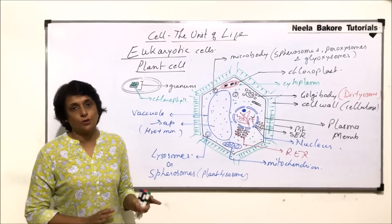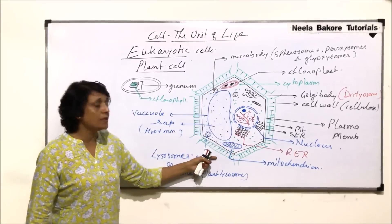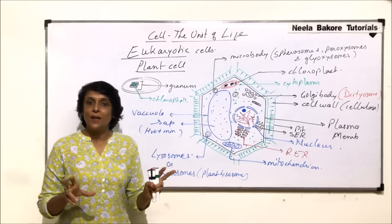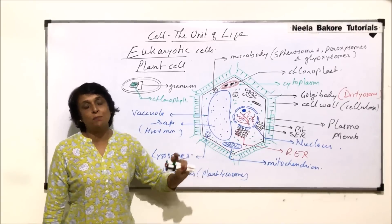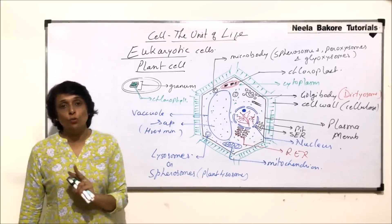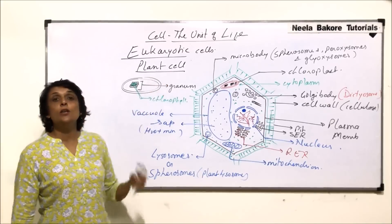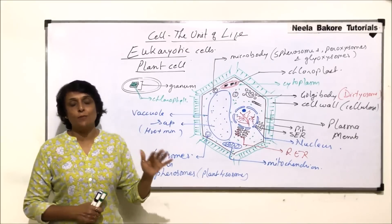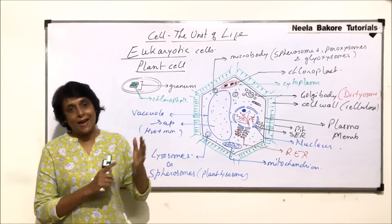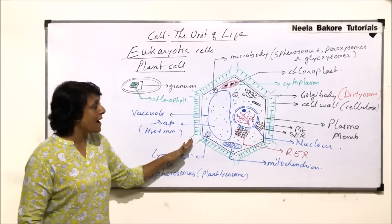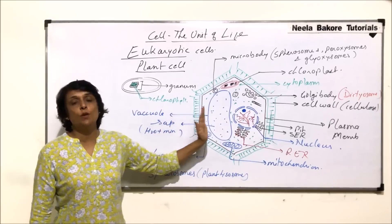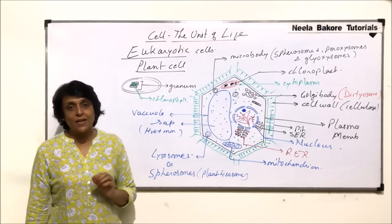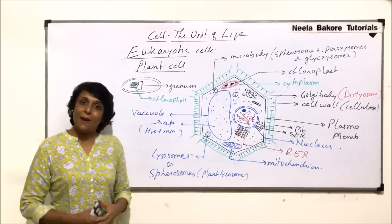So this is a typical plant cell, and we now have a comparison of how plant cells and animal cells differ from each other. Both are typical eukaryotic cells. After understanding prokaryotic as well as eukaryotic cells, we will now take up the individual parts of the cell — starting with the plasma membrane in the next video.